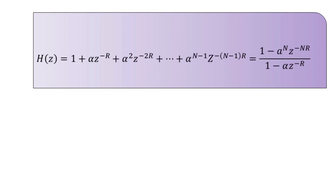Now let us discuss the multiple echo filter. For generation of a fixed number of multiple echoes spaced R sampling periods apart with exponentially decaying amplitudes, one can use an FIR filter with transfer function: H(z) = 1 + α·z^(−R) + α²·z^(−2R) + … + α^(N−1)·z^(−(N−1)R), which equals [1 − α^N · z^(−NR)] / [1 − α·z^(−R)].